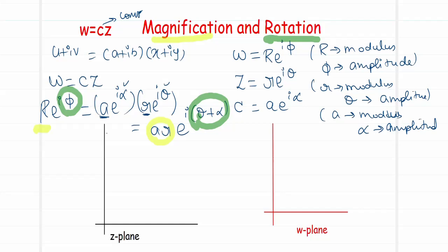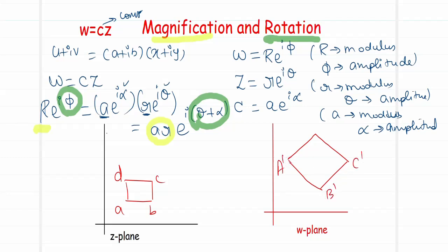In terms of objects and images, if we have an object A, B, C, D in the z-plane, the transformation w = cz will magnify and rotate the data, producing A', B', C', D' in the w-plane. The square-like structure in the z-plane becomes bigger in size in the w-plane, and its orientation is rotated to a different angle.